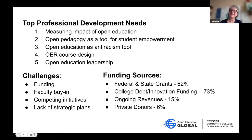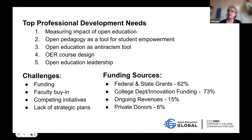Funding is often at the very top of challenges. This was the first time we asked about funding sources: federal and state grants were a little over 60% of what was funding the work. Colleges were also funding through innovation grants and faculty stipend grants at 73%. However, having an ongoing open education budget is still in the minority at about 15%, and private donors came in even less at 6%.